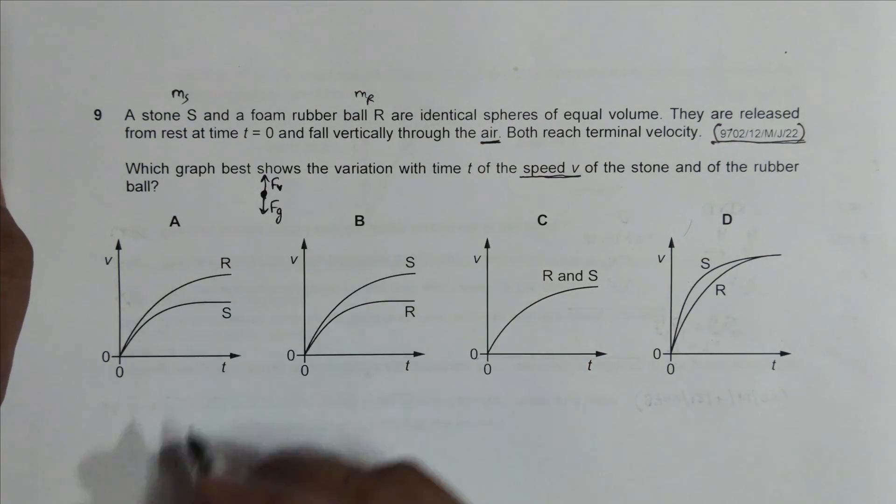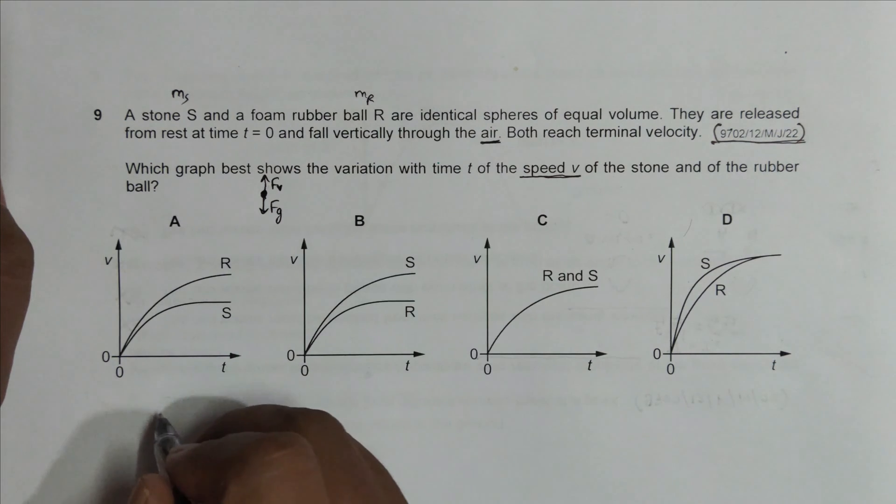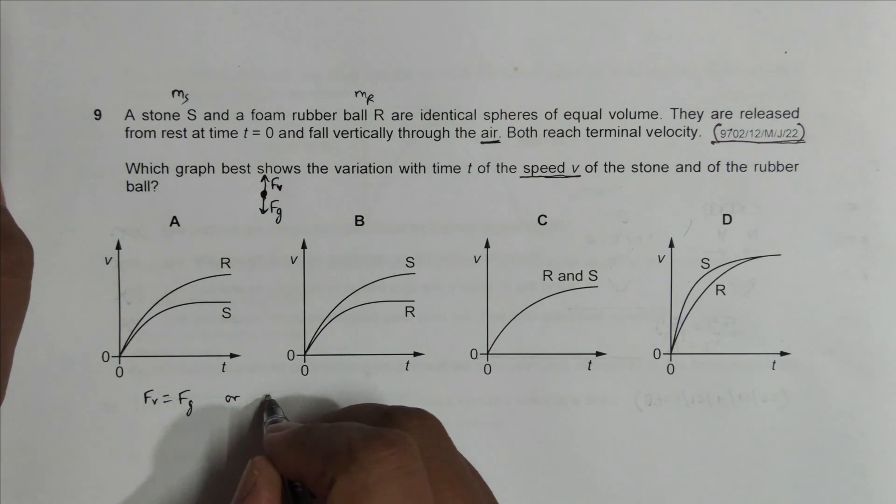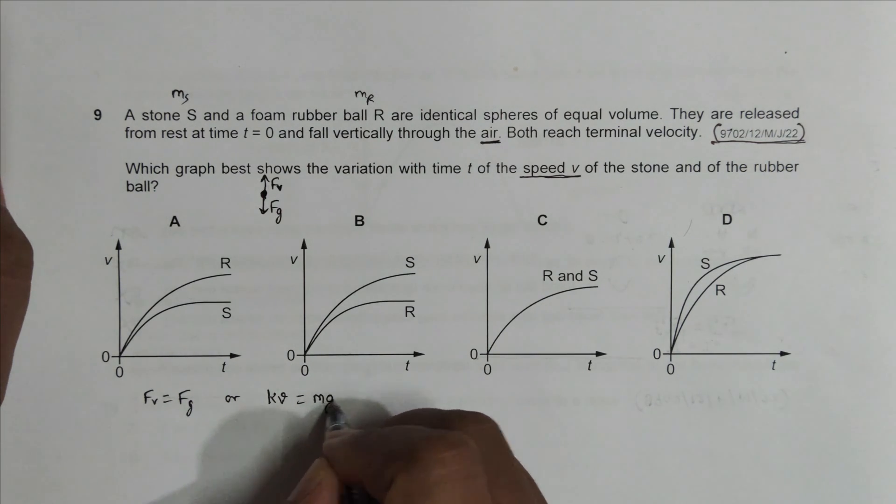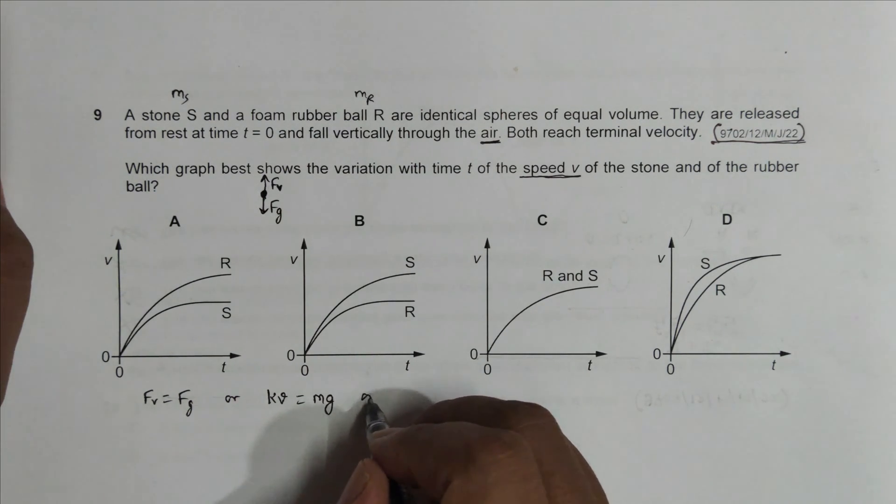During terminal velocity they should be equal, so I can write F_viscous = F_gravity, which gives us F_viscous equal to some constant k times v, because it depends on velocity, equal to mg.